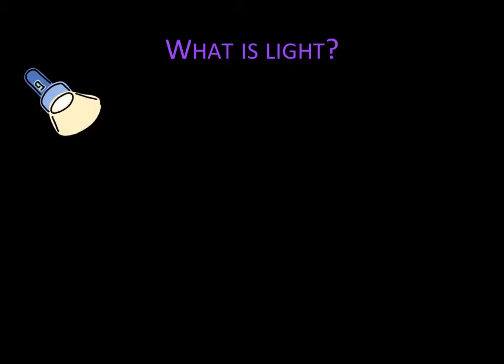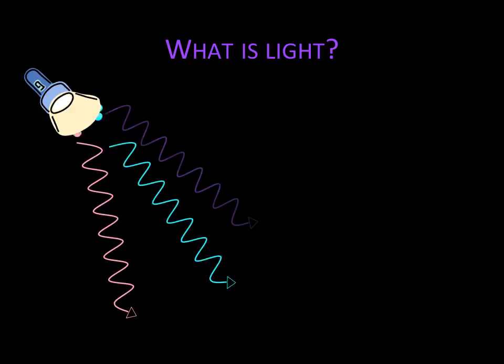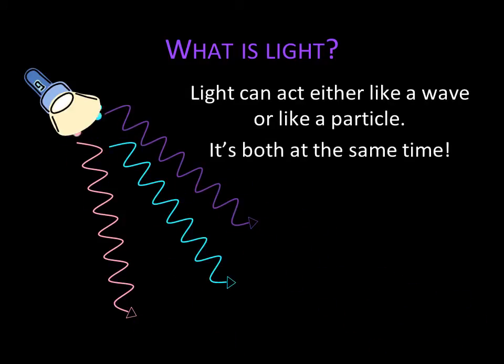What is light? Isaac Newton thought light was made up of countless tiny particles, but other scientists conducted experiments showing light demonstrated wave-like properties. Which is it? Well, actually, it's both. It simply depends on how you measure it.